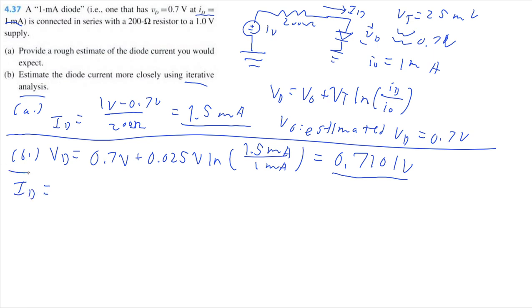Now let's recalculate our current. I'm going to draw a line through this, showing that we're doing a new calculation. So, we're going to recalculate our current with our new calculated voltage across the diode. 1 volt minus 0.7101 volts divided by 200 ohms. So, now I'm getting 1.4495 milliamps.